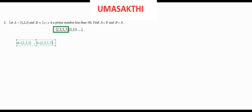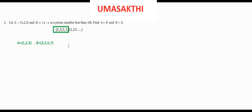So A and B values are confirmed. A value: {1, 2, 3}. Next, B value: {2, 3, 5, 7}.